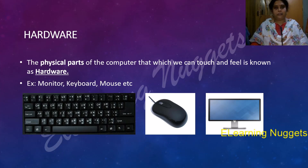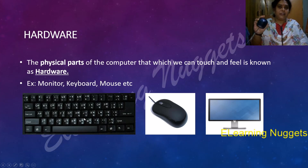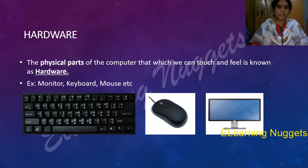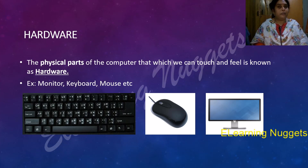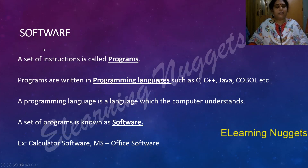Now we talk about some terms related to computers. Hardware is the physical parts of the computer which you can touch, see, and feel. For example, I have a mouse here — this mouse is hardware, it is something I can touch and feel. I also have a mic here — this is also hardware. So all the parts of the computer which we can touch and feel are known as hardware.